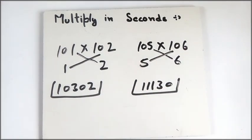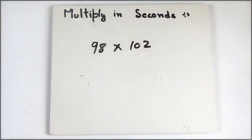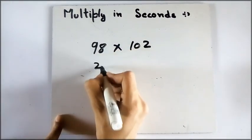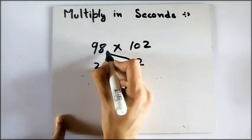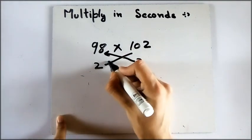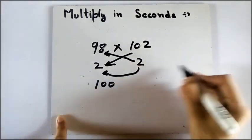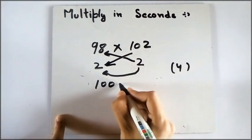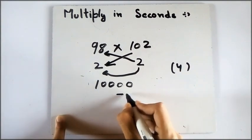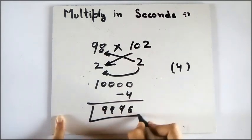Now let's take a look at a different example. Here, one number is less than 100 and the other is greater than 100. You have to see how much this one is less than 100 and how much this one is greater than 100. Either you can add this one here or subtract this one here — we will get 100. Now multiply these two: 2 multiplied by 2 is 4. Here, you have to add two zeros and then subtract that number from this one. After doing this, we get 9996, and this is our answer.